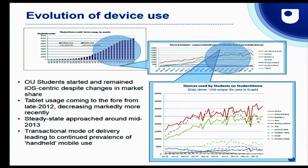One thing that we noticed, and still notice, is that OU students tend to be very Apple-focused, despite changes in market share over time. They have followed typical market trends around using tablets — tablets came to the fore in 2012 and have been decreasing rapidly recently, which we assume is a result of people who now have larger smartphone screens making a decision between laptop and phone, rather than desktop, laptop, tablet and phone.